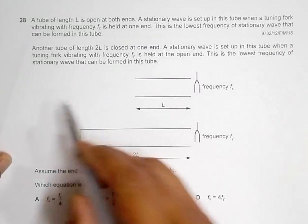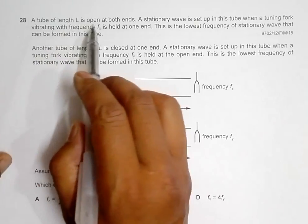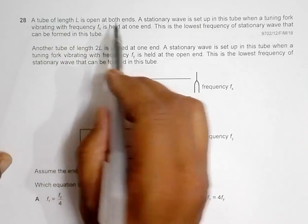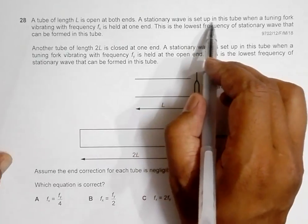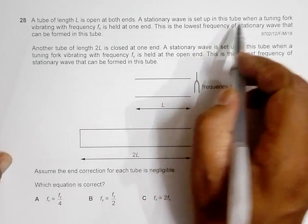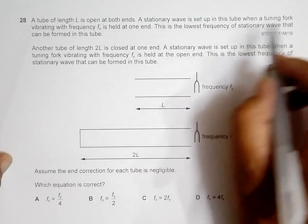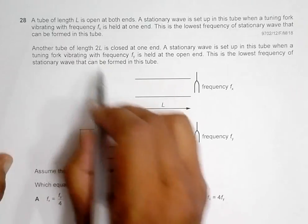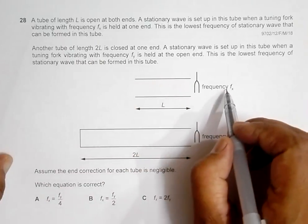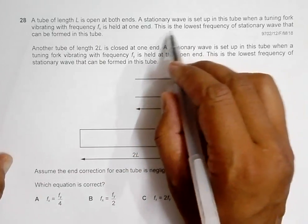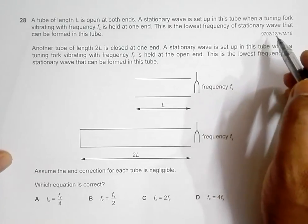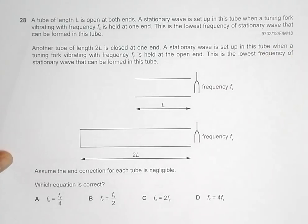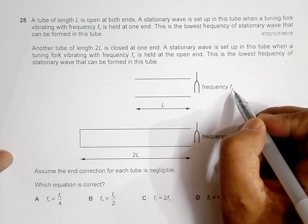So we have two tubes here. A tube of length L is open at both ends. A stationary wave is set up in this tube when a tuning fork vibrating with frequency fx is held at one end. This is the lowest frequency of stationary wave that can be formed in this tube, so fx is the fundamental frequency.